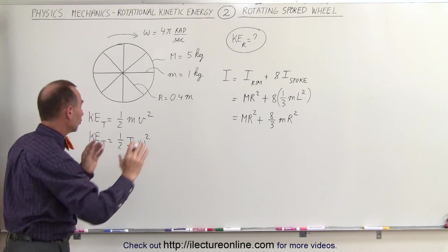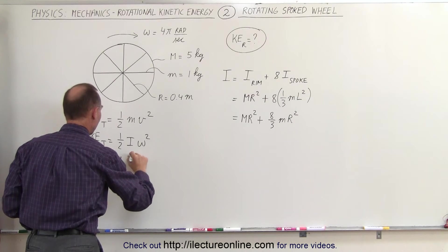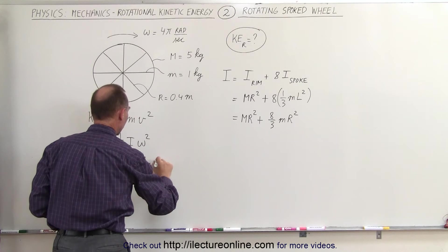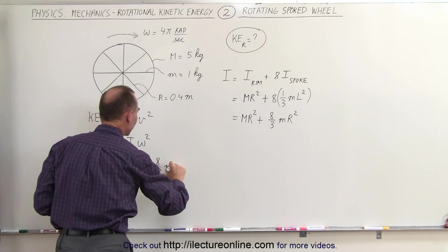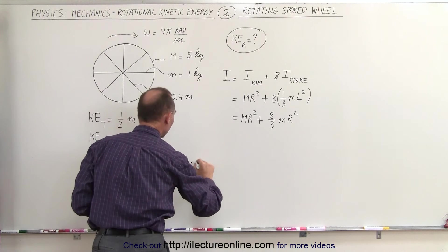Now that we have the moment of inertia, we can plug that into our equation. The kinetic energy is 1/2 times the mass of the rim times r² plus 8/3 the mass of each spoke times r² times the angular velocity squared.